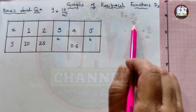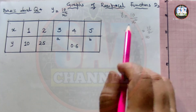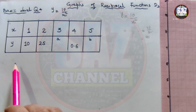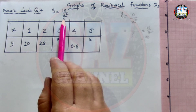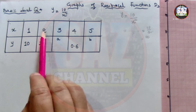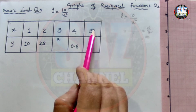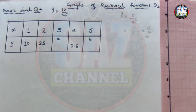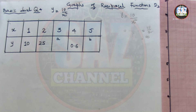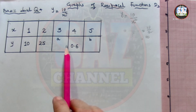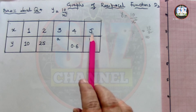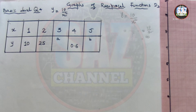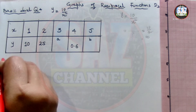The question says: the table below shows some values of x and the corresponding values of y for y = 10/x². The x values are 1, 2, 3, 4, and 5. The y values are: 10, 2.5, then a missing value for x=3, then 0.6 for x=4, and another missing value for x=5.